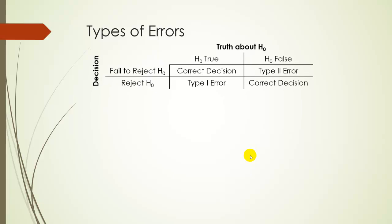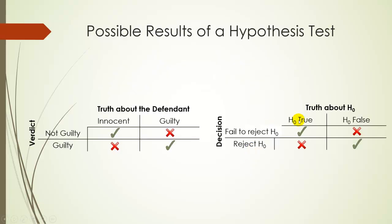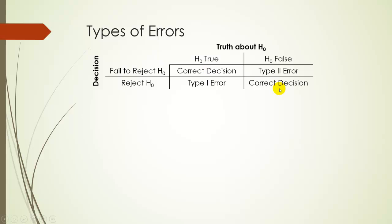There are two types of mistakes that can be made. If H₀ is true and we fail to reject it, that's good. If H₀ is false and we reject it, that's good. But if H₀ is true and we reject it — contradicting the status quo when it's actually correct — that's called a Type 1 error, and it's considered embarrassing. If H₀ is false and we fail to reject it, that's called a Type 2 error. Comparing to the justice system, we tend to think the Type 1 error is worse.